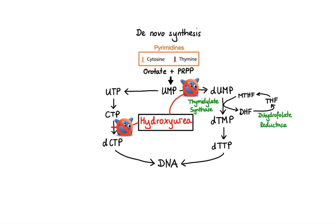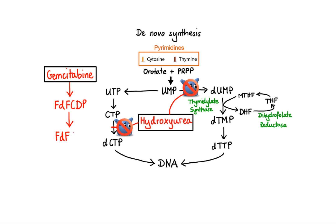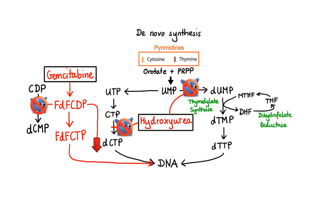Another anti-metabolite that interferes with pyrimidine synthesis is a drug called gemcitabine. Upon entry into the cell, gemcitabine gets rapidly phosphorylated to form active metabolites: gemcitabine diphosphate (dFdCDP), followed by gemcitabine triphosphate (dFdCTP). The first active metabolite, gemcitabine diphosphate, inhibits ribonucleotide reductase that converts cytidine diphosphate to deoxycytidine monophosphate in the salvage pathway through which nucleosides are recycled. As a result, deoxycytidine triphosphate pools are depleted, which in turn makes it easier for the second active metabolite, dFdCTP, to insert itself into DNA. Interestingly, insertion of dFdCTP into DNA allows further insertion of an additional base pair before DNA polymerase is inhibited, making DNA repair more difficult. This action is called masked termination.